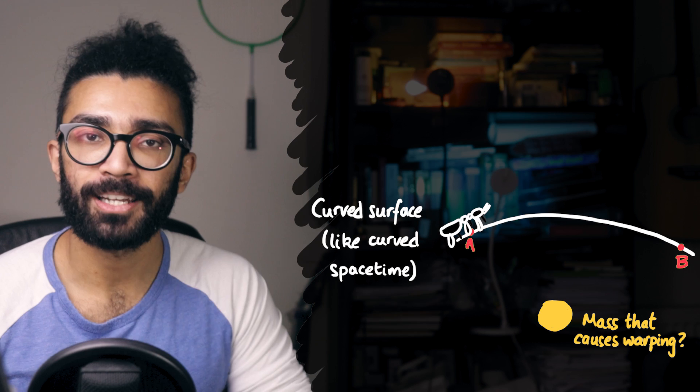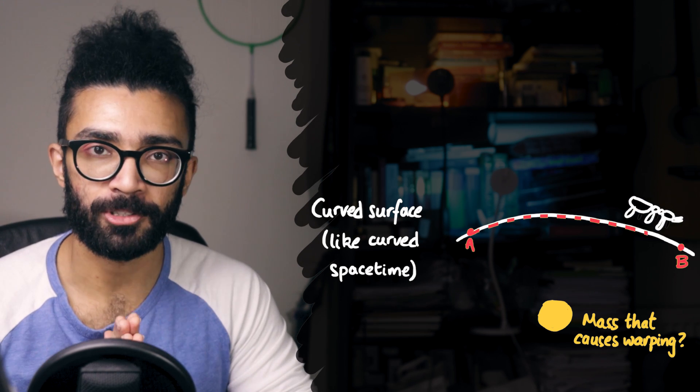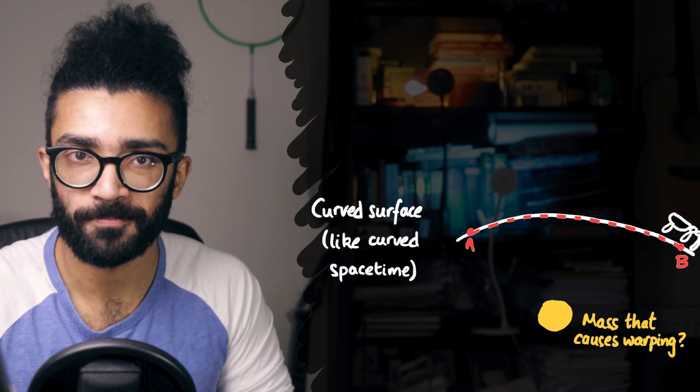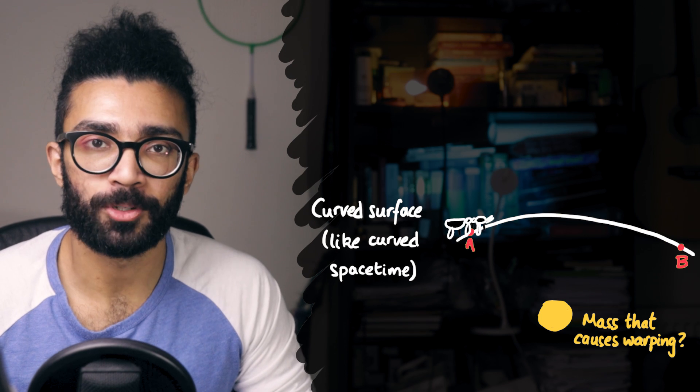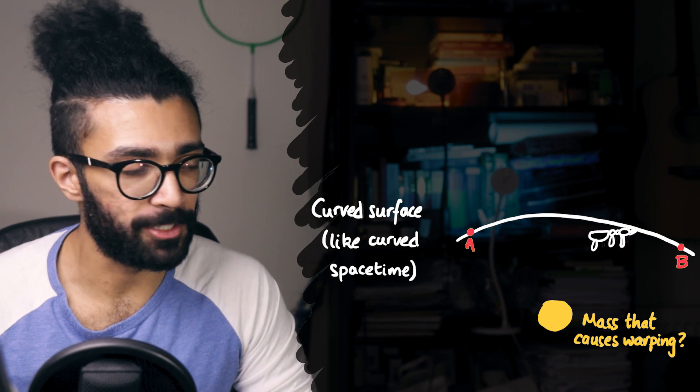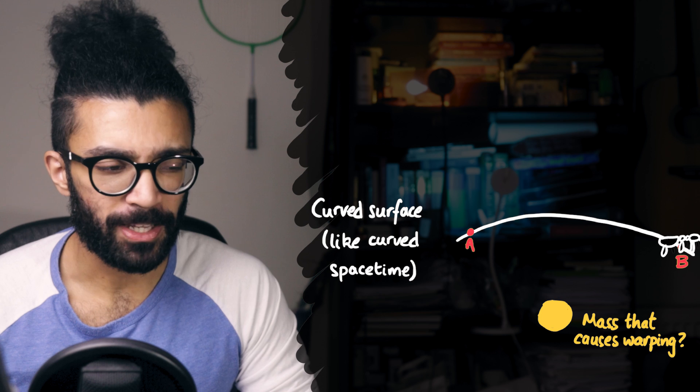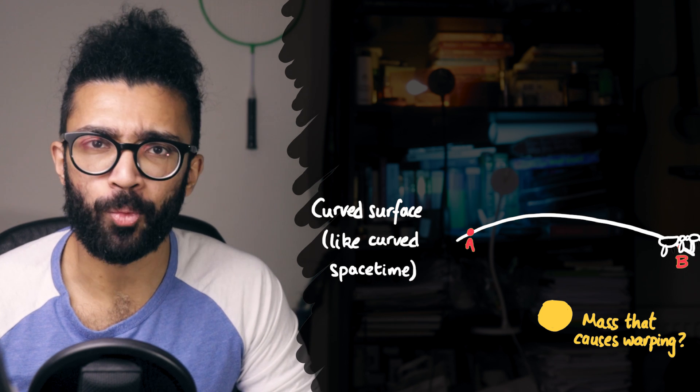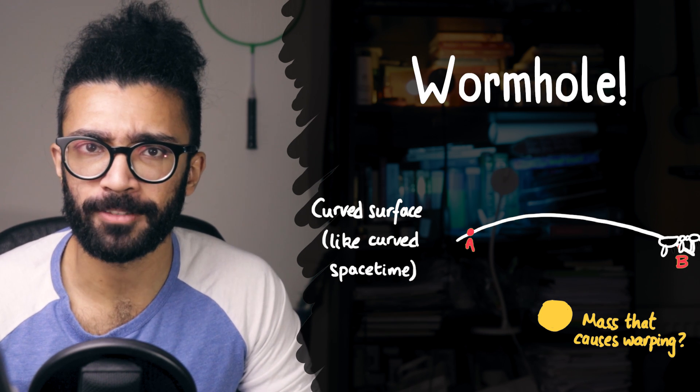It cannot jump up off the surface or burrow down into the surface. So, when getting from point A to B, what's the shortest route? It's now a curved path. In this example, if the ant wanted to burrow down into the surface in order to get from A to B quicker, that's kind of the equivalent of us travelling through a wormhole in our spacetime fabric.